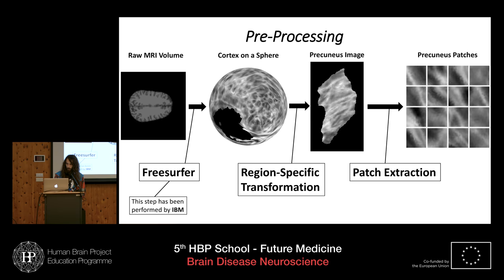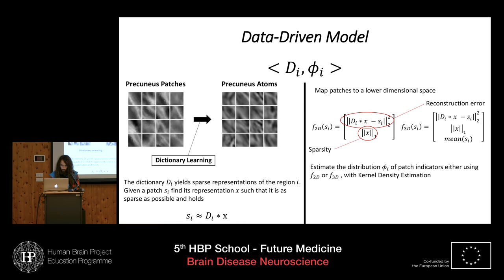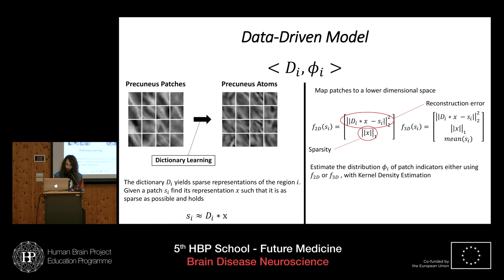Once we have the image, we can extract patches. Our dataset was a longitudinal set of scans of MRI volumes. From early visits, we extract patches and we learn a dictionary for each region such that it yields a sparse representation of that region.